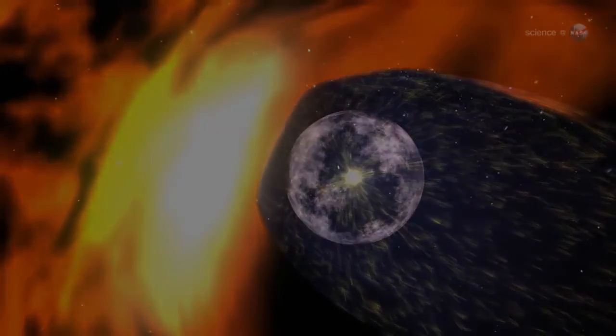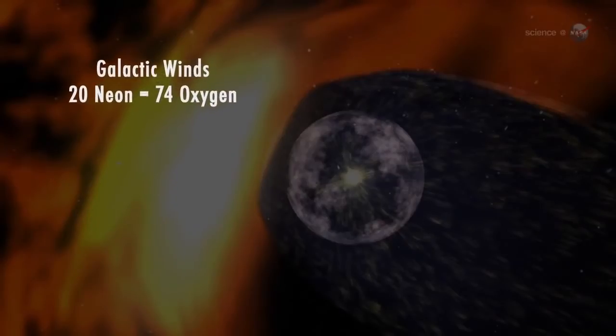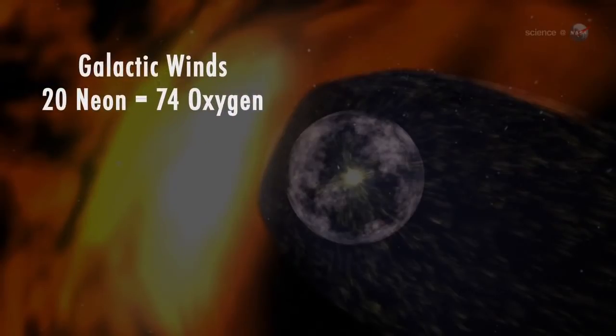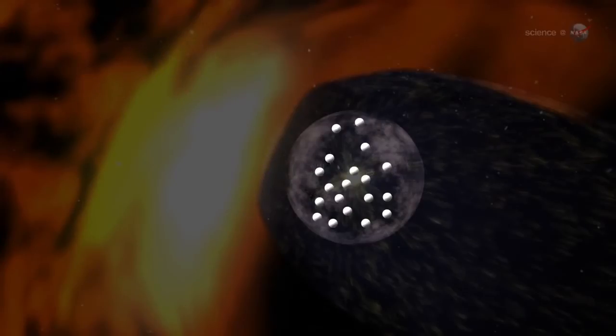the IBEX team reported that for every 20 neon atoms in the galactic wind, there are 74 oxygen atoms. In our own solar system, however, for every 20 neon atoms there are 111 oxygen atoms. That translates to more oxygen in any given slice of the solar system than in local interstellar space.